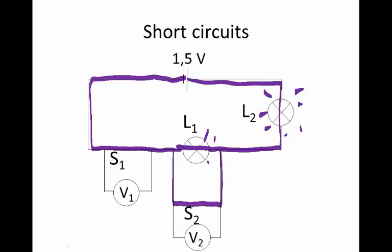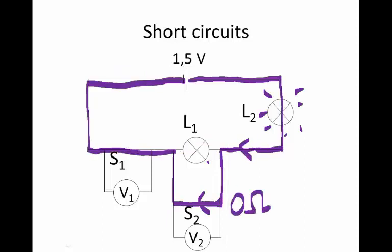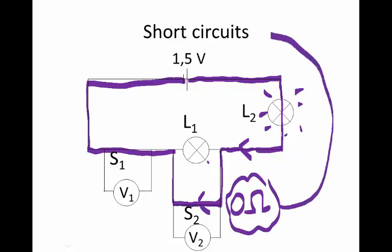But since we have this section in parallel, this bulb is not going to shine. Why? Because the charge here must make a choice between this path which has no resistance and this path which has some resistance. None of the charge chooses to go through L1 — it all rather chooses to go through this very easy path, this short circuit.